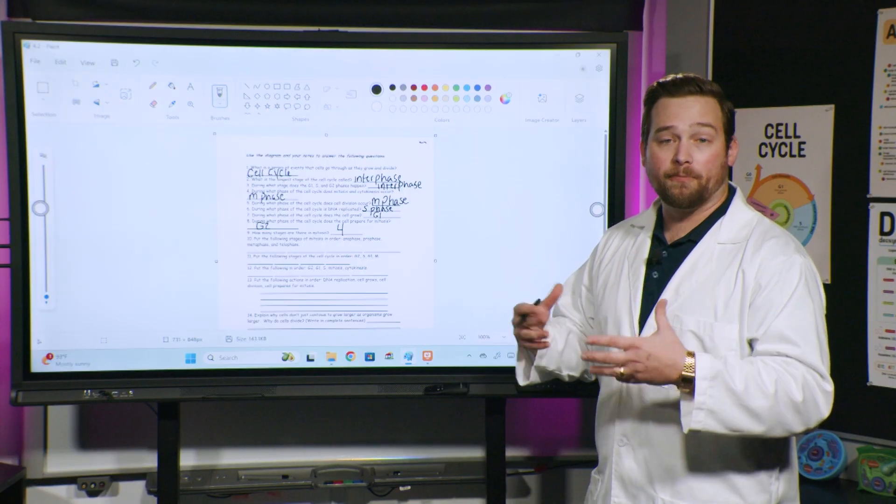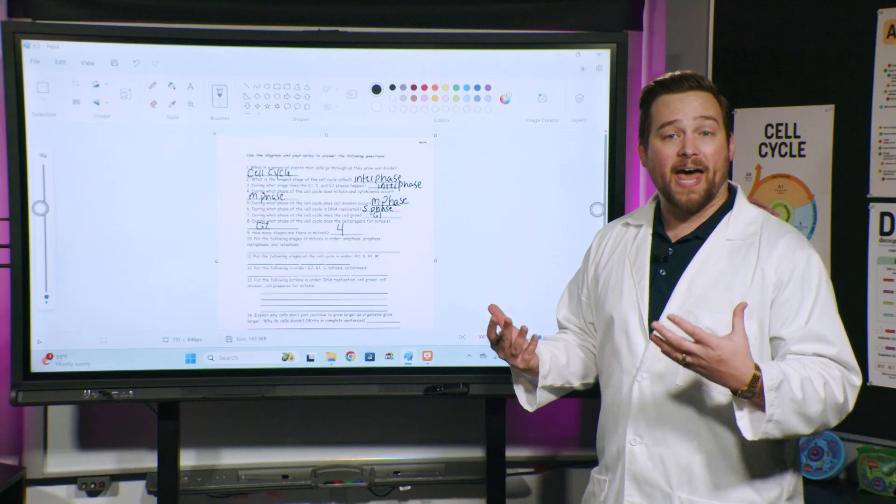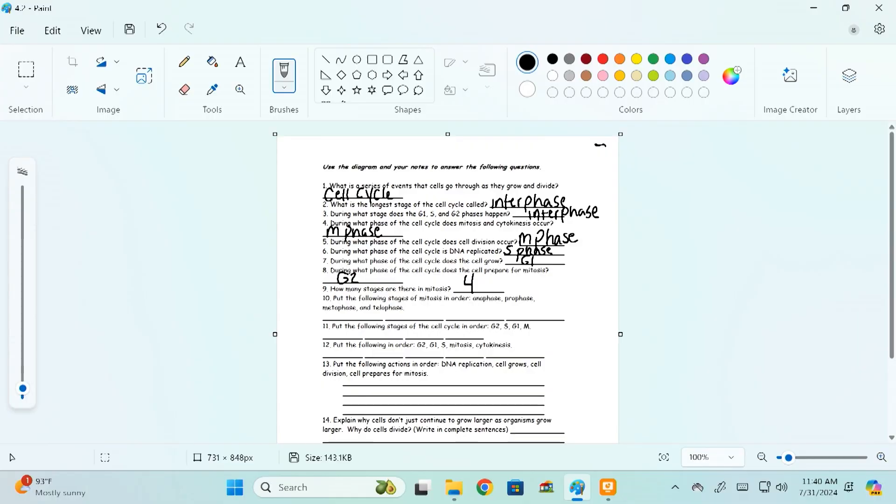So for this, there's a really helpful acronym to remember. Does anyone remember what that acronym is? The acronym is PMAT. Okay, so let's go ahead and write that first, PMAT. Why is this helpful to remembering the stages of mitosis? Well, it gives us the proper order of them. So mitosis, the four different phases are prophase, metaphase, anaphase, and telophase. So if you can just remember PMAT, that'll help you remember those four in the correct order.